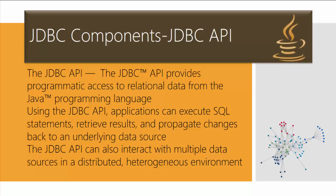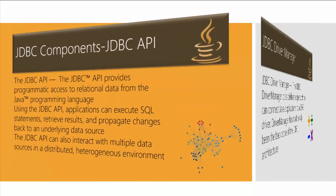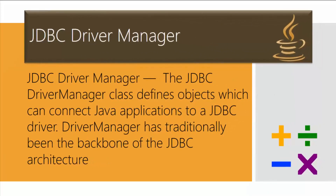The first JDBC component is the API — the Application Programming Interface. This API provides access to relational data from the Java programming language. Using the JDBC API, applications can execute SQL statements, retrieve results, and propagate those changes back to an underlying data source. The API can also interact with multiple data sources in distributed or heterogeneous environments, so you're not limited to just one type of database — you can have an Oracle server and a SQL Server running, and JDBC will communicate with both.